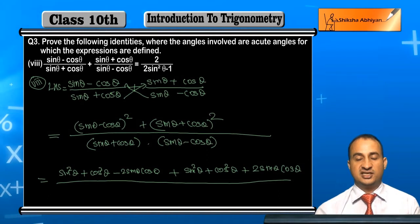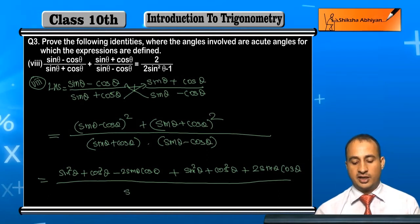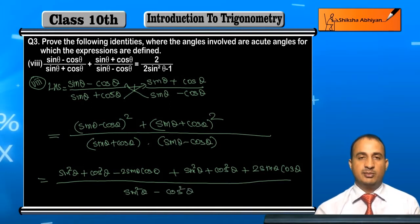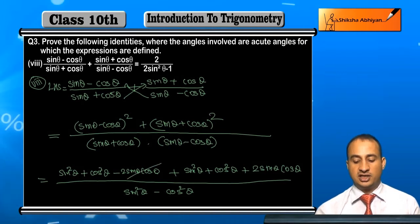My student, you have sine theta plus cos theta times sine theta minus cos theta. This formula becomes sine square theta minus cos square theta. How? Because a plus b times a minus b equals a square minus b square. Now see, minus 2 sine theta cos theta plus 2 sine theta cos theta cancel off.